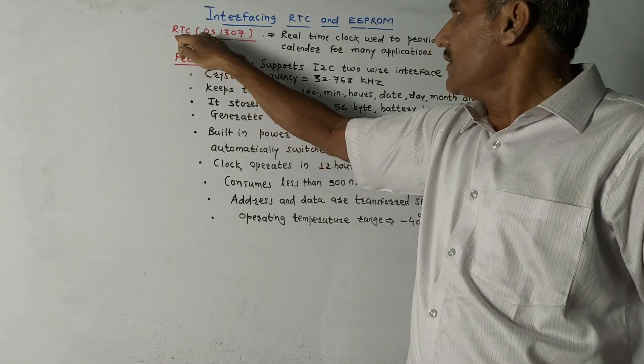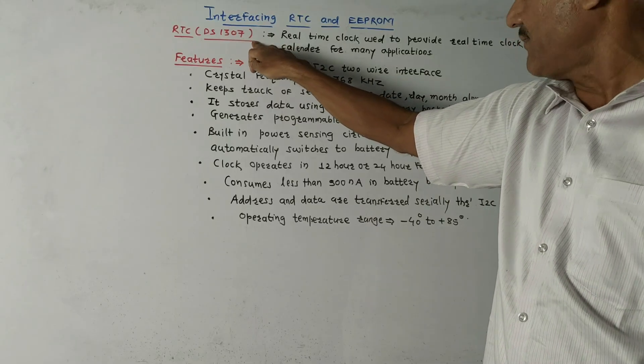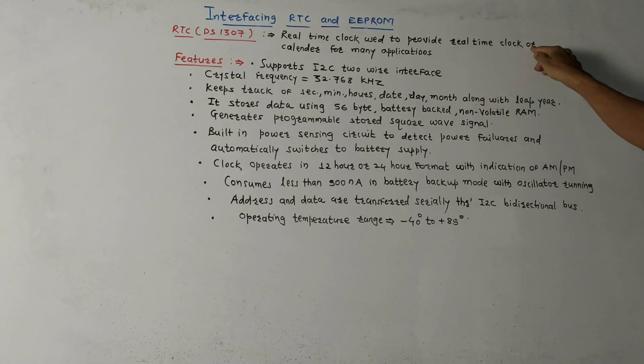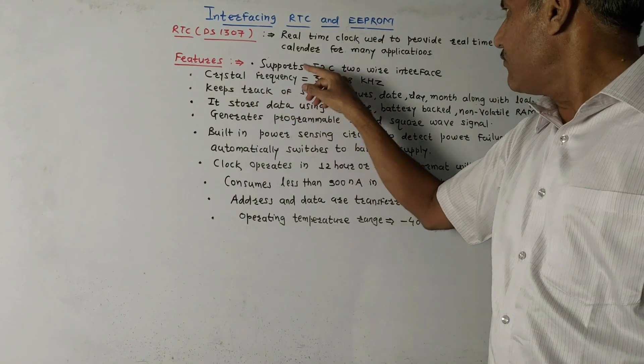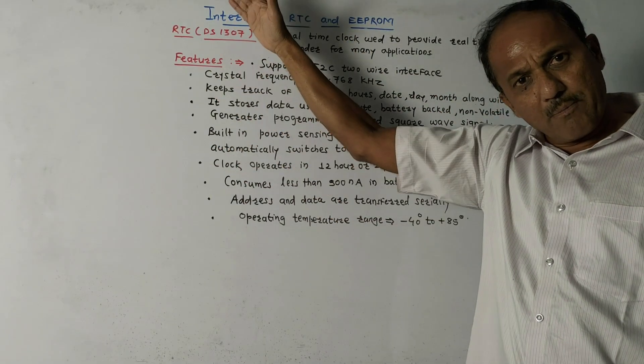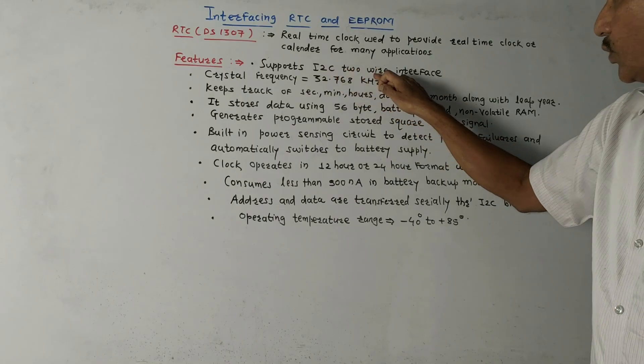First let us discuss real-time clock. The corresponding IC is DS1307, a real-time clock used to provide real-time clock or calendar for many applications.